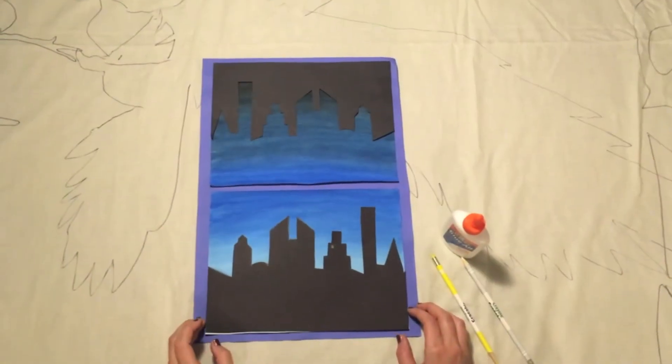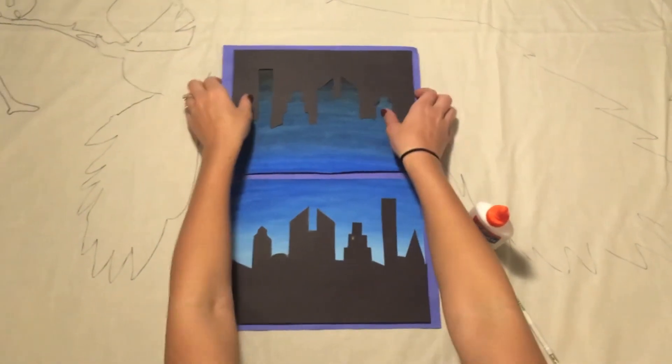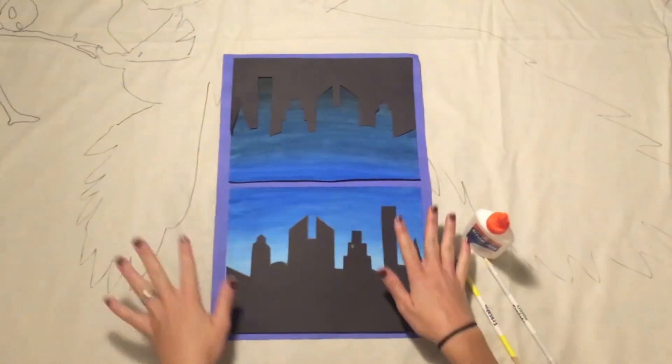For the last step of your project, you're going to be gluing your positive cityscape to your day sky and your negative cityscape to your night sky. After it's glued down,